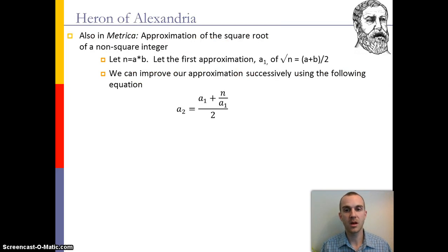The other thing that he found was the approximation for a square root of a non-square integer. So first you find the product of that integer, any two numbers that multiply to make that number. The first approximation, we just average the two numbers together. Then what we have to do for each successive approximation is that we're going to take the previous approximation, we're going to add the original number divided by the approximation and divide that by 2. And we can keep doing this as many times as we want until we get to a value that we're comfortable with.